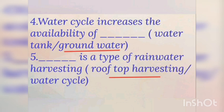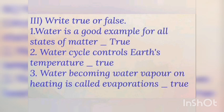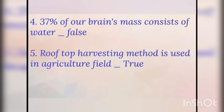Rooftop harvesting is a type of rainwater harvesting. Third, Roman numeral: write true or false. Water is a good example for all states of matter - true. Water cycle controls Earth's temperature - true. Water becoming water vapor on heating is called evaporation - true. 37 percent of our brain's mass consists of water - false. Rooftop harvesting method is used in agriculture field - true.